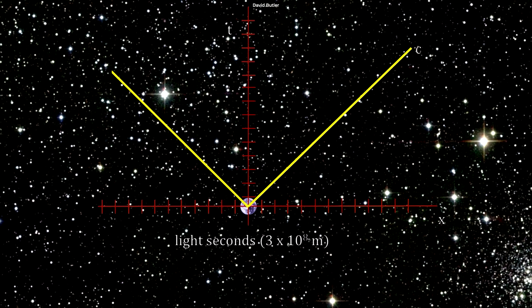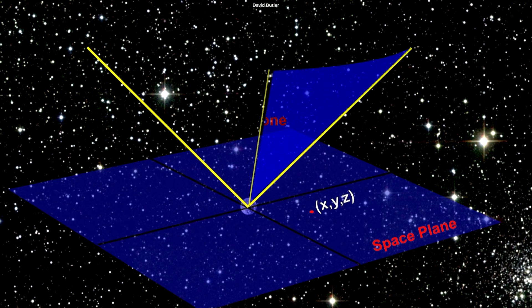In Minkowski spacetime, the three dimensions of space are represented by x, y, and z coordinates, and the fourth dimension represents time.